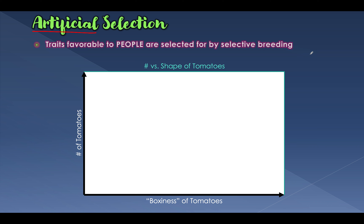Pugsley, because he has such a short face, is also more likely to have his eyeballs dislocate from his head, and more likely to have breathing problems because of his short nose. We say that's artificial selection — we chose to breed pugs the way they currently look because we like it, we think it's cute.